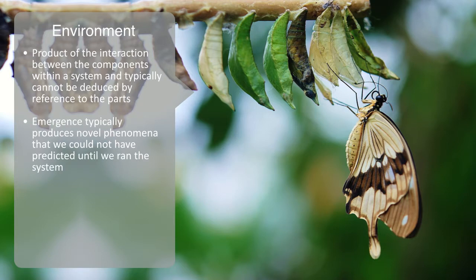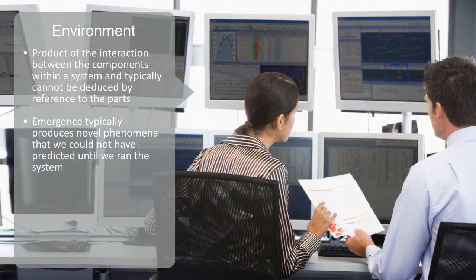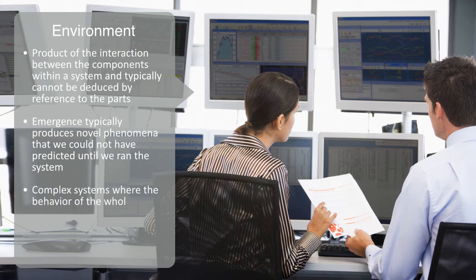An example of this might be our concerns around technologies like genetic engineering or algorithmic trading. We can fully analyze and understand how an individual trading algorithm behaves or what effect altering the genes in a plant has on the plant in isolation. But because ecosystems and financial markets are complex systems where the behavior of the whole system is an emergent product of these interactions,